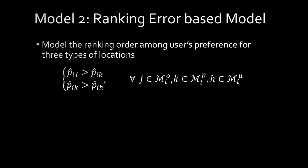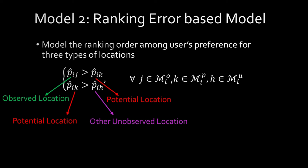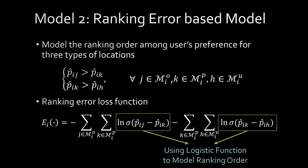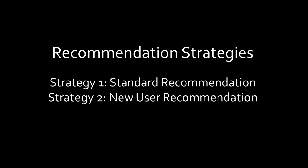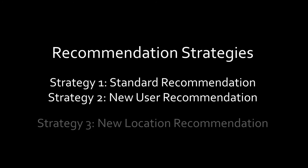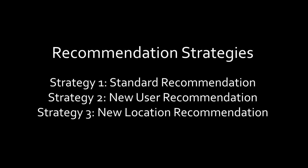In the second model, we model the ranking order among users' different types of check-ins. We propose three recommendation strategies: standard recommendation, new user recommendation, and new location recommendation.